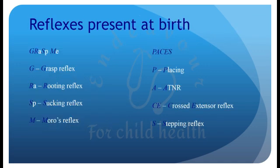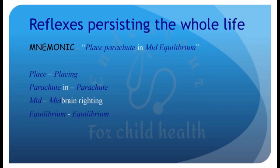So reflexes present at birth are: Grasp, Rooting, Sucking, Moro, Placing, Asymmetric Tonic Neck Reflex, Crossed Extensor Reflex, and Stepping Reflex. Reflexes persisting the whole life can be remembered by the mnemonic 'Place Parachute in Mid Equilibrium,' that is: Placing reflex, Parachute reflex, Midbrain righting reflex, and Equilibrium reflex.